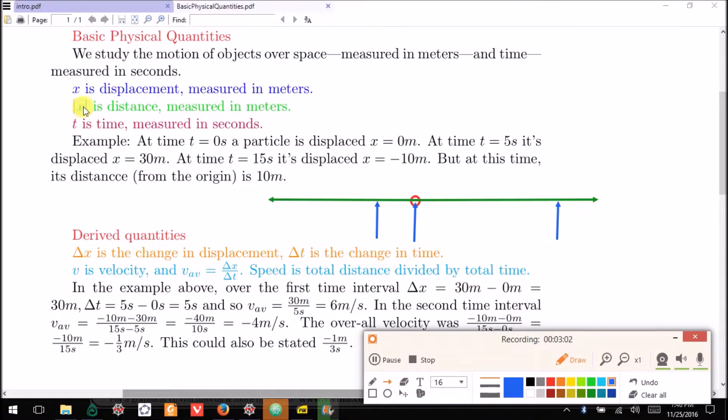So that kind of justifies why we call the distance absolute value x. So it has this feature that distance is never negative, whereas displacement can be. Displacement keeps track of in which direction you're located away from the origin. The distance measurement only tells you how much you are located away from the origin.